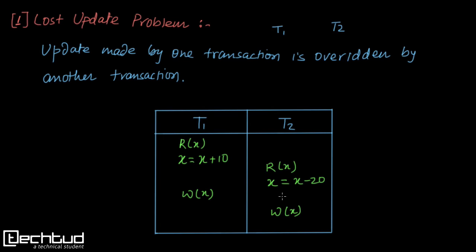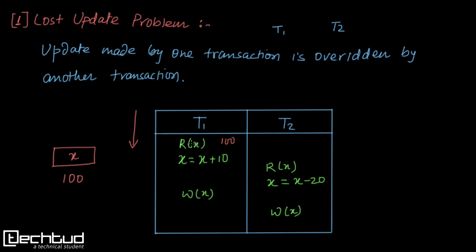Let's understand this with an example. We have two transactions and this is the order in which operations are executed. Transaction T1 starts with a read operation over variable x. Assume x has an initial value of 100 in the database. T1 reads 100, then performs an arithmetic operation increasing x by 10, so it becomes 110 internally — but remember it is not written back yet. Before T1 writes back the value, another transaction T2 reads the value of x.